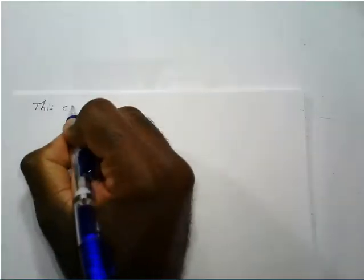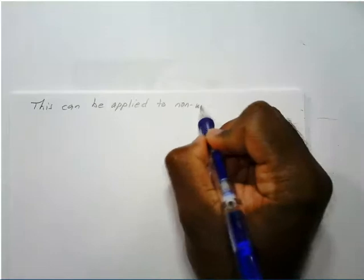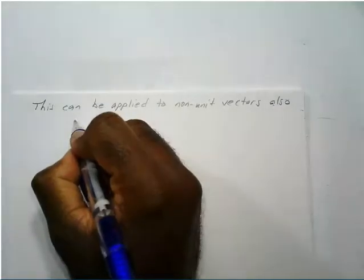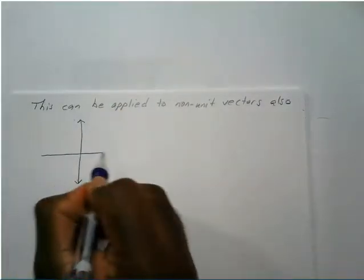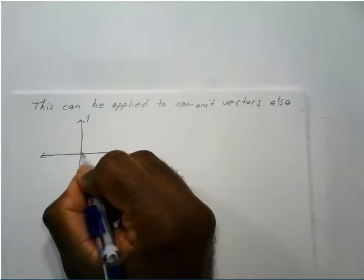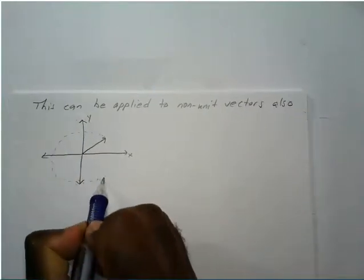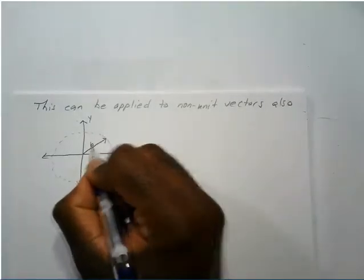Now the fun thing about this is it can actually be applied to non-unit vectors also. Once again we draw our XY axis, and we have a vector going out in some direction — it can be any direction at all. Instead of a unit vector, let's say this is some vector B.